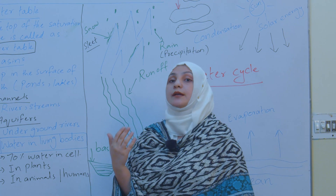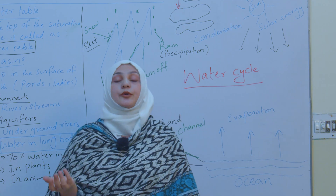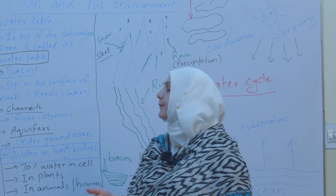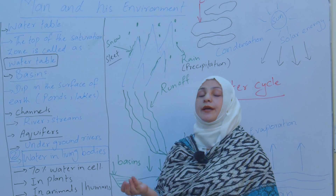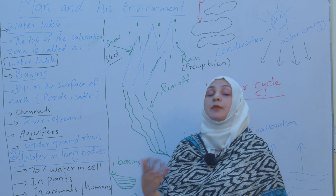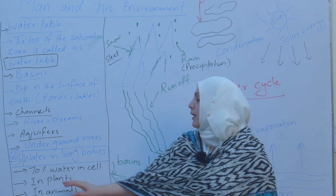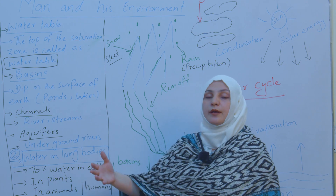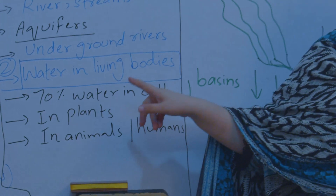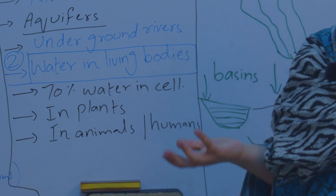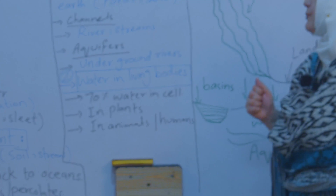Now let's talk about water in living bodies. Living organisms are a very important component of our ecosystem and environment, and there is also water in them. Living organisms include animals, plants, human beings, and microorganisms — all of these are living organisms that need water. If we study the living cells, almost 70% of water is present in the cell. The rest of the 30% is made up of other substances. So that's why water is very, very important.